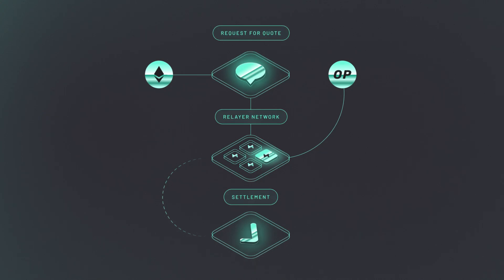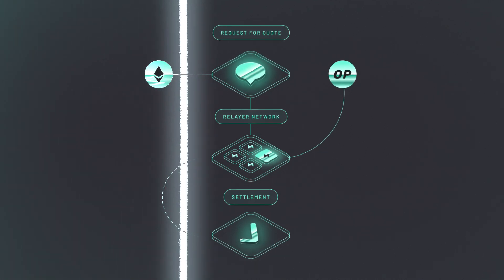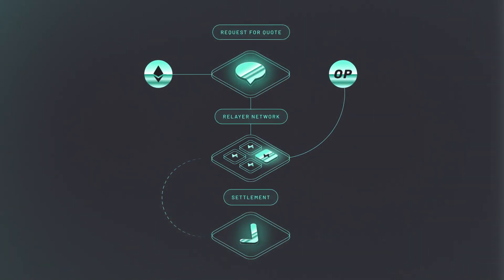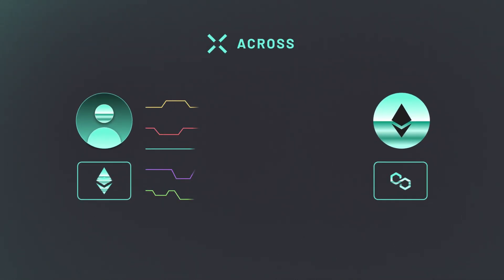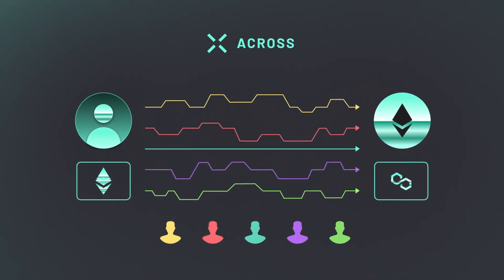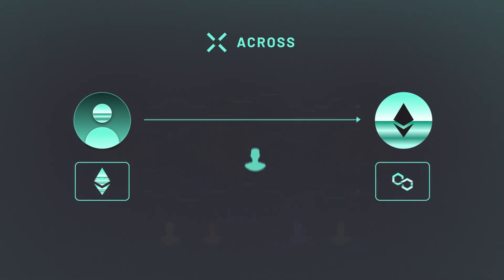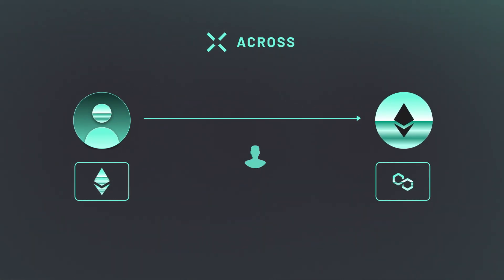Together, these layers facilitate the seamless transfer of assets between different blockchain networks. In this system, users specify their desired cross-chain outcome, and relayers compete to fulfill their intents as fast and cheap as possible. Relayers take on finality risk on behalf of the user by fronting the user's desired assets on their desired destination chain.